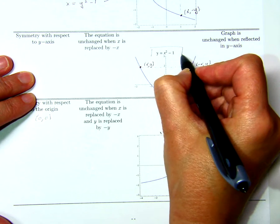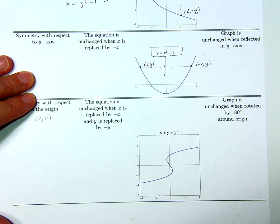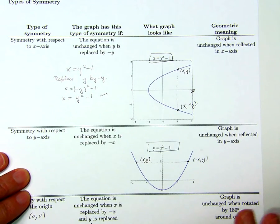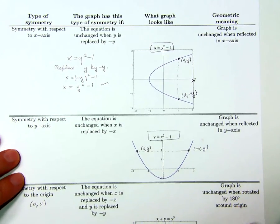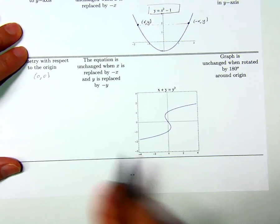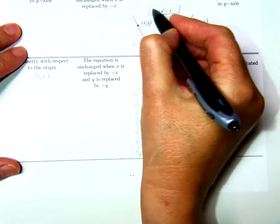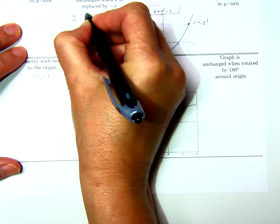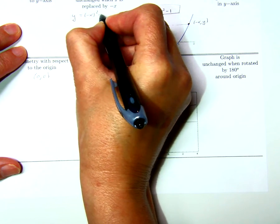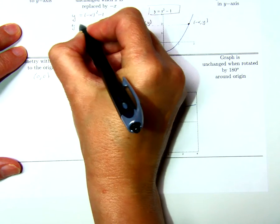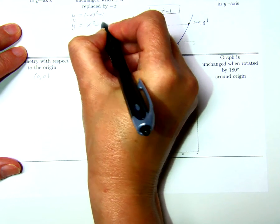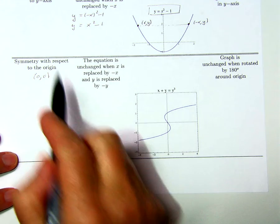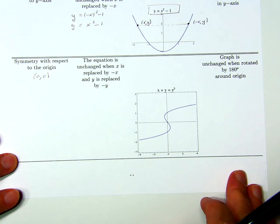Let's check it out. Consider y = x² - 1. Note that that's the same equation as x = y² - 1, except I've switched the roles of x and y. If I replace x by negative x in this equation, I get y = (-x)² - 1, which equals y = x² - 1. So I can conclude that this equation has symmetry with respect to the y-axis.